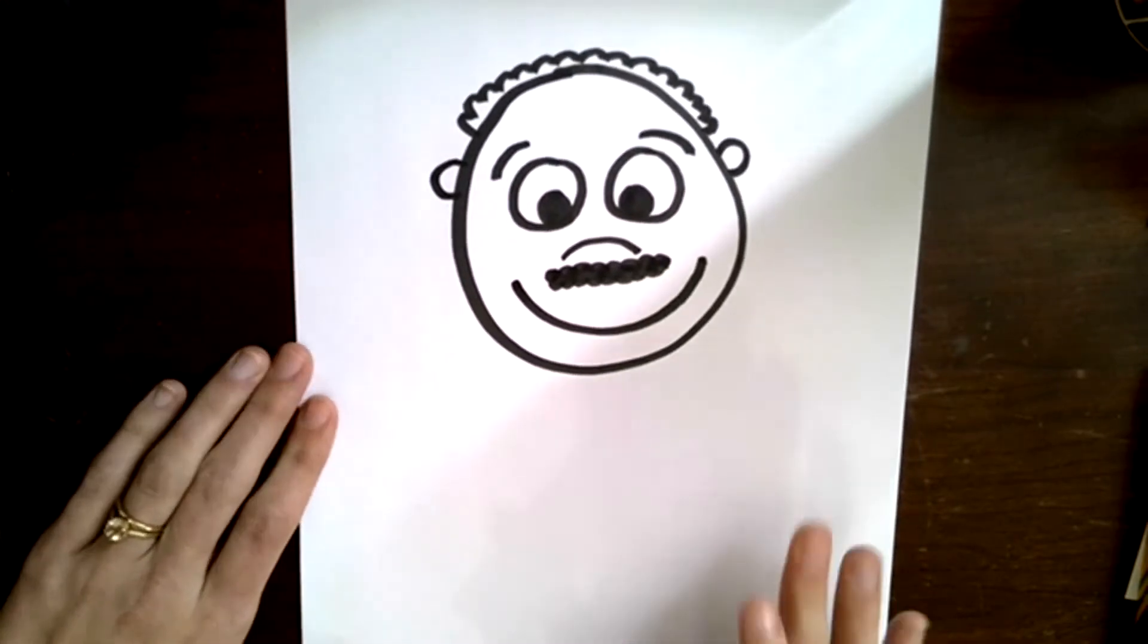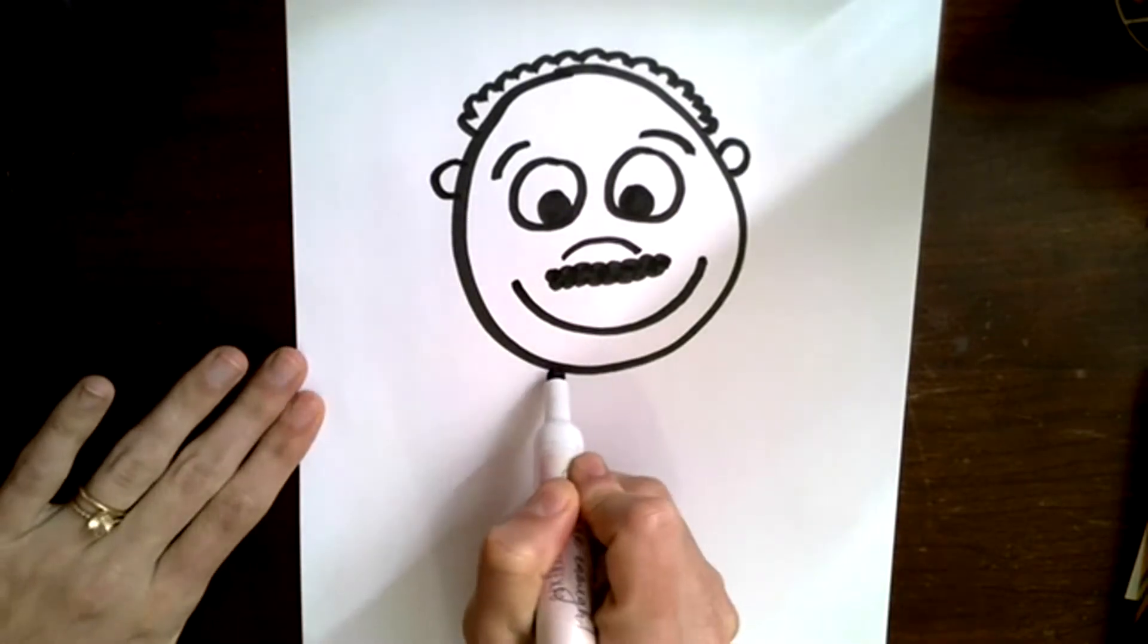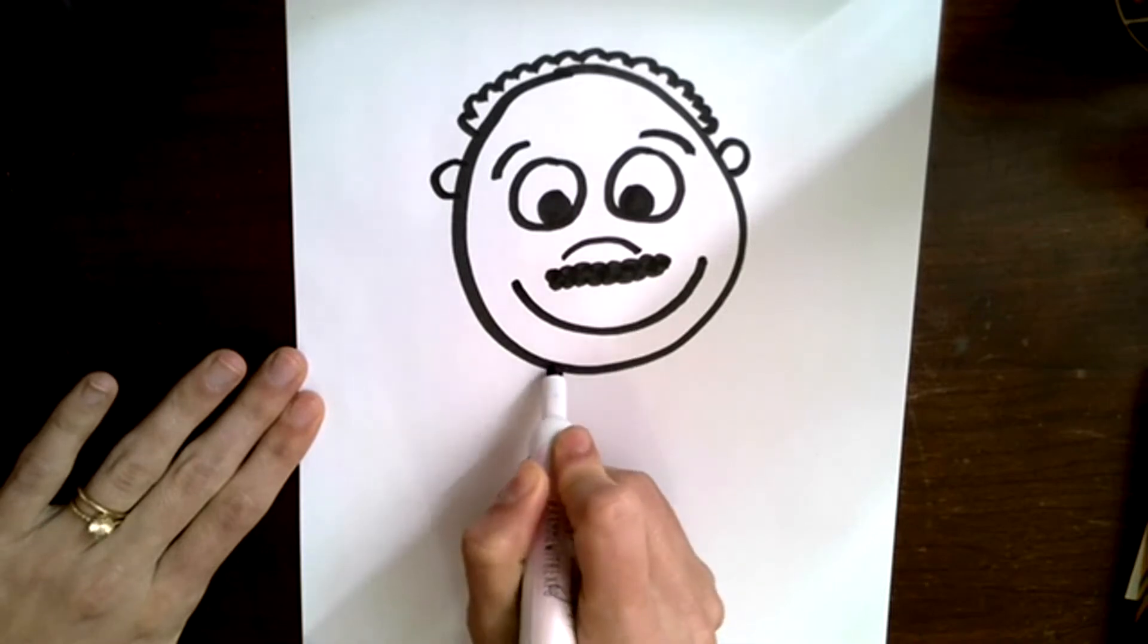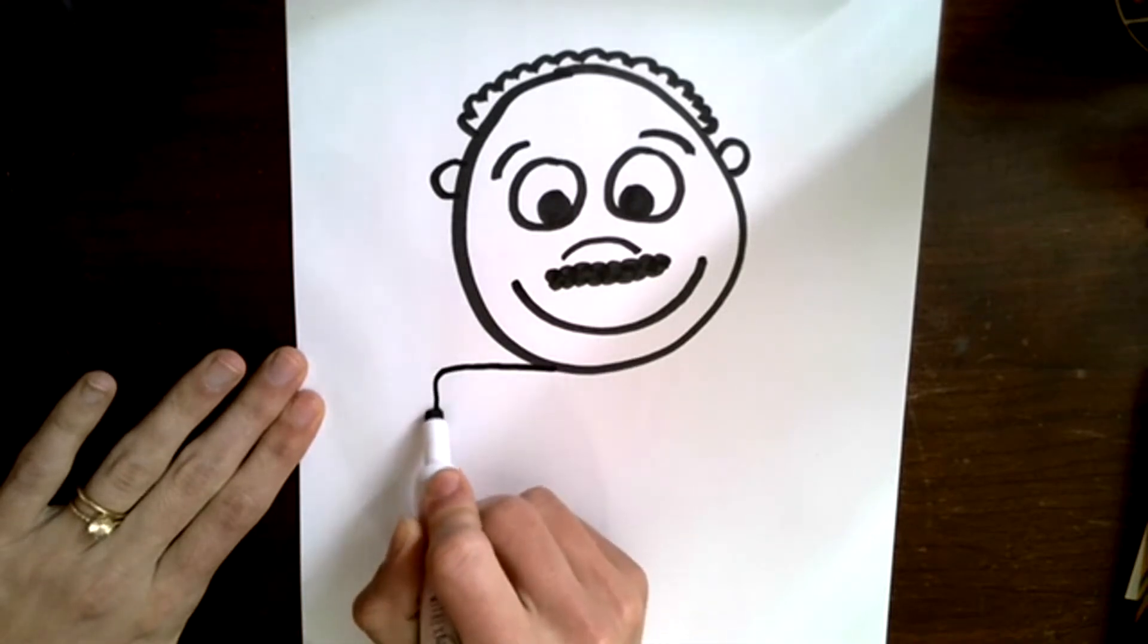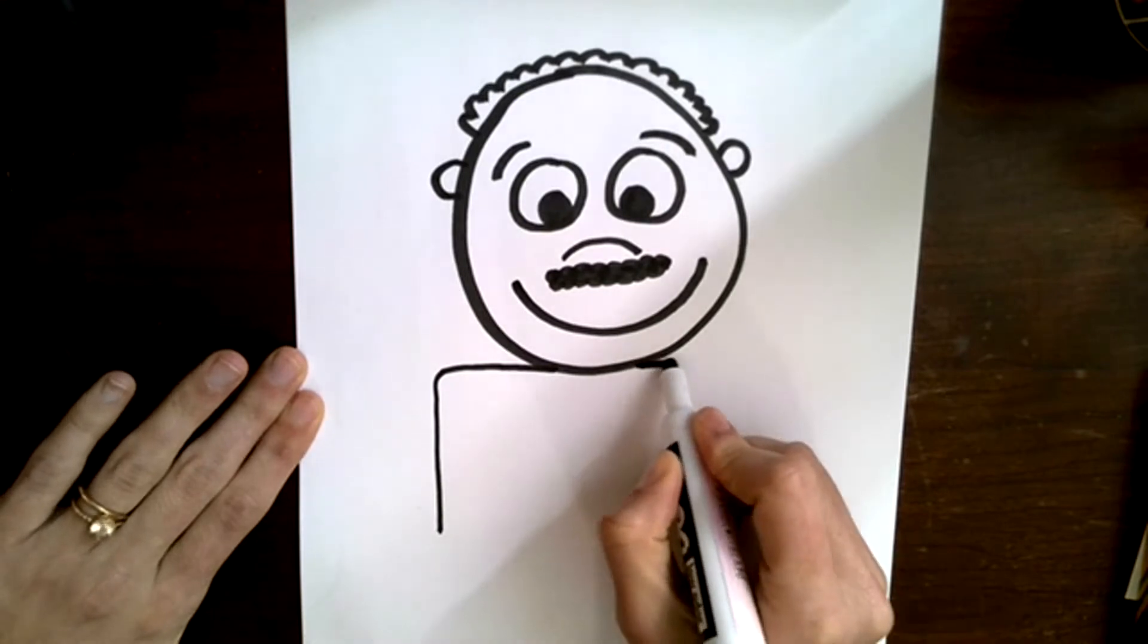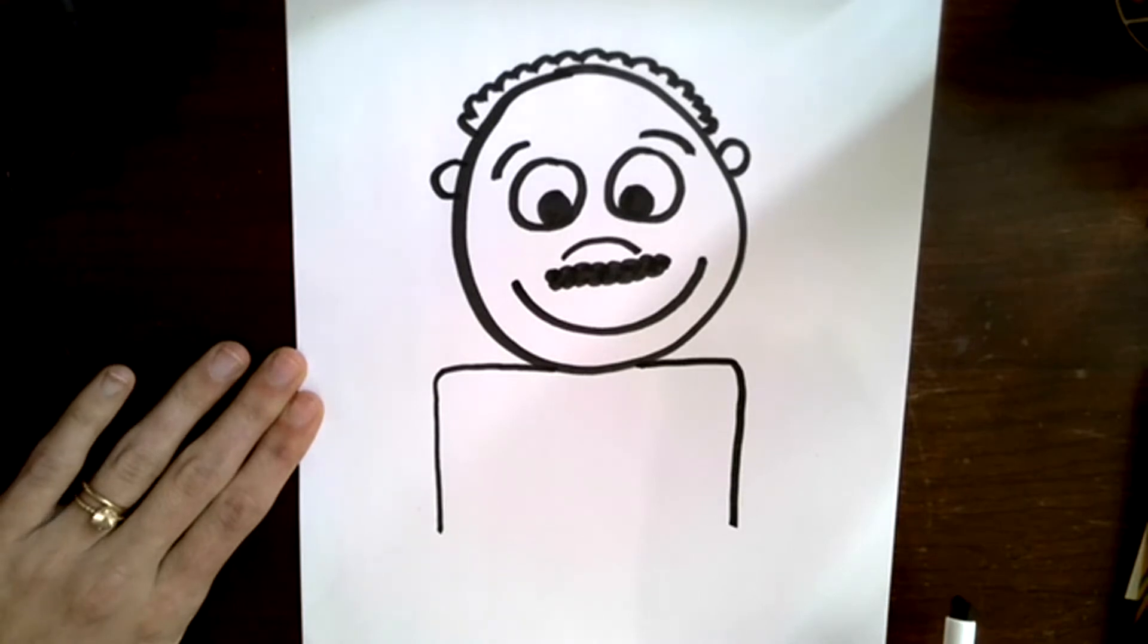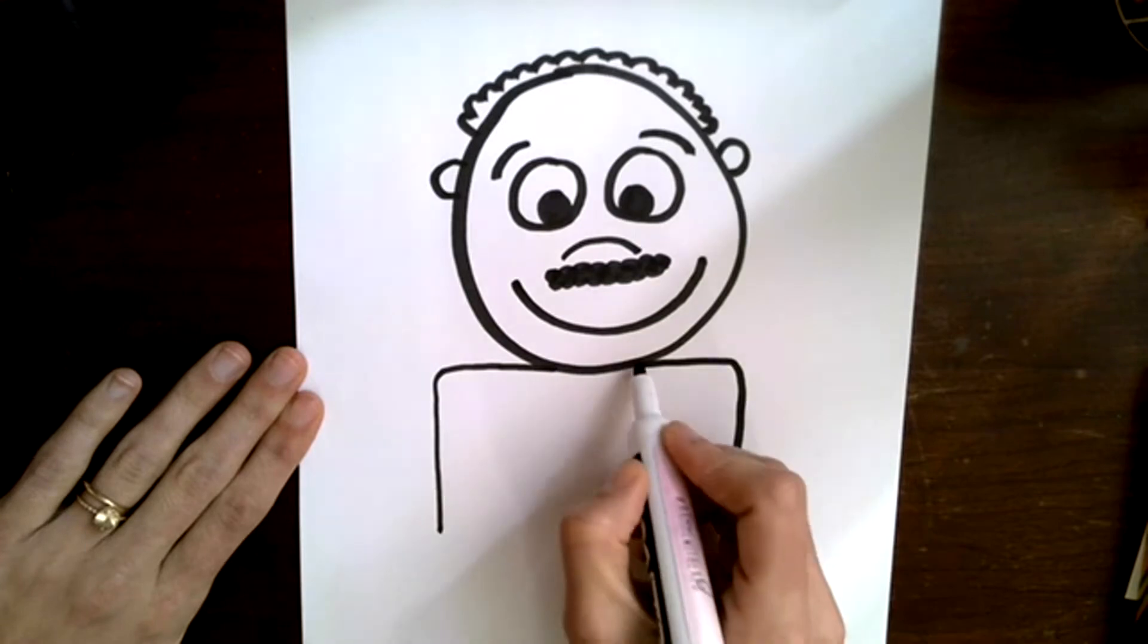was usually seen wearing a suit, so we're going to give him a nice suit here. The first thing we're going to do is from the bottom of his head we're going to draw a line out and a line down. Now we're going to give Martin Luther King Jr.